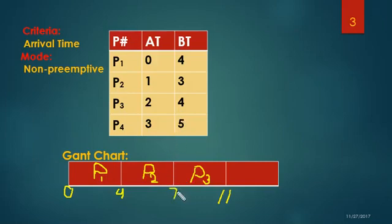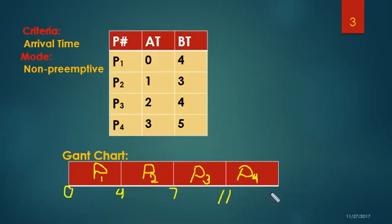Now I am going to pick up the next process, which is P4. The burst time for P4 is 5 and it has arrived at time 3. The total burst time for P1, P2, P3, and P4 has become 11 plus 5, which equals 16. So I am putting 16 here.